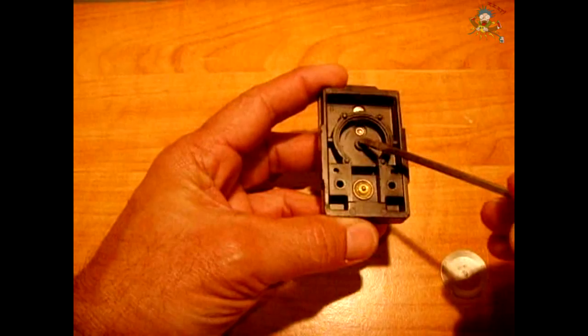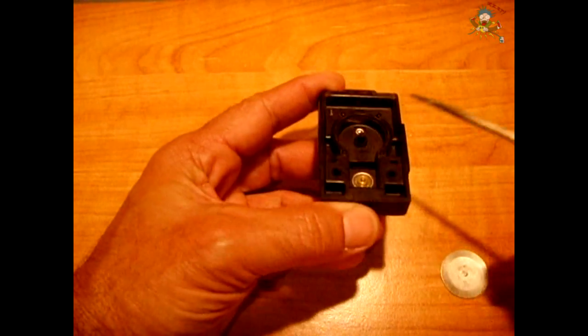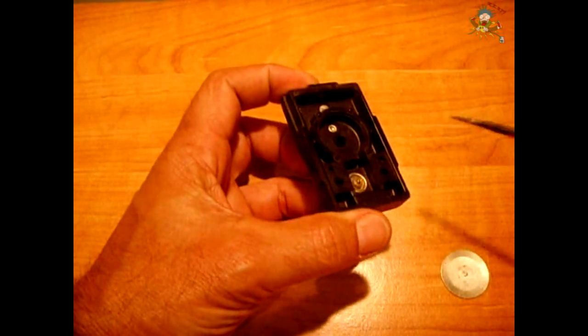Now you're going to notice this little black piece of plastic sticking up. It goes up and down, it feels spring-loaded. This is actually a faulty thermostat.